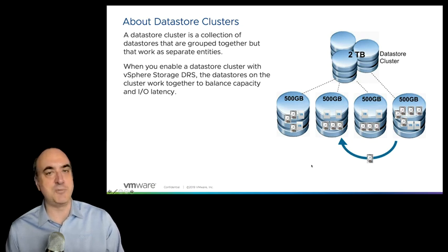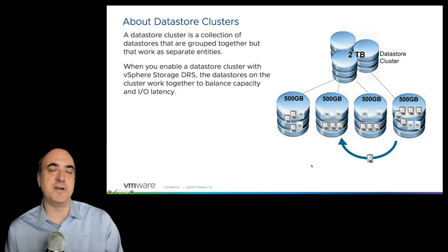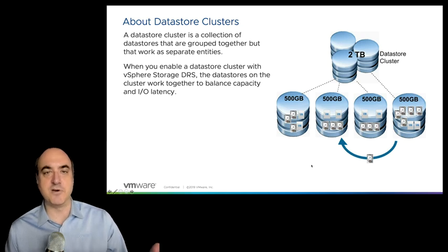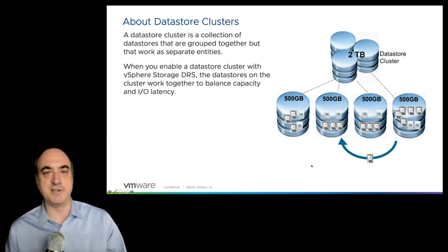The data stores in the cluster should basically be the same RAID level, same performance, and same levels of availability. You want to make sure that if a VM's files are moved from one data store to another, it's imperceptible — no application or user should notice any difference in performance or availability. The data stores should be interchangeable.